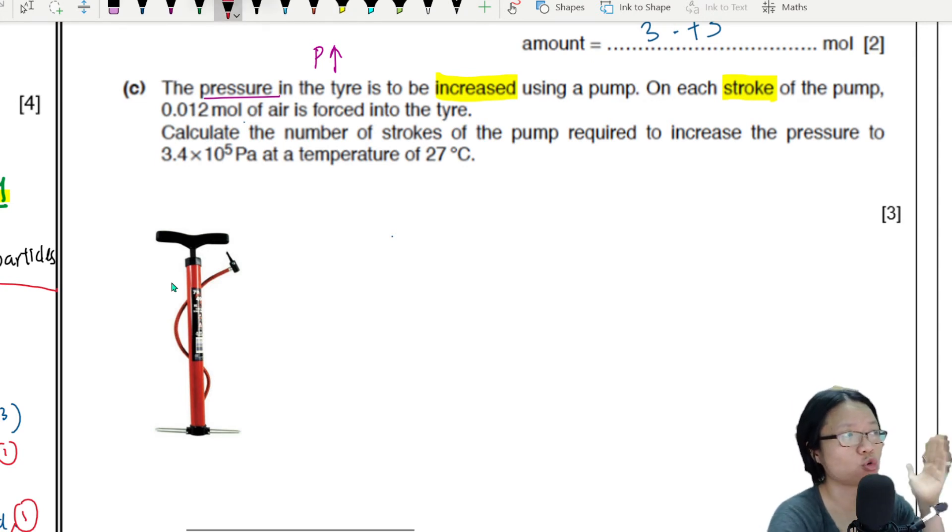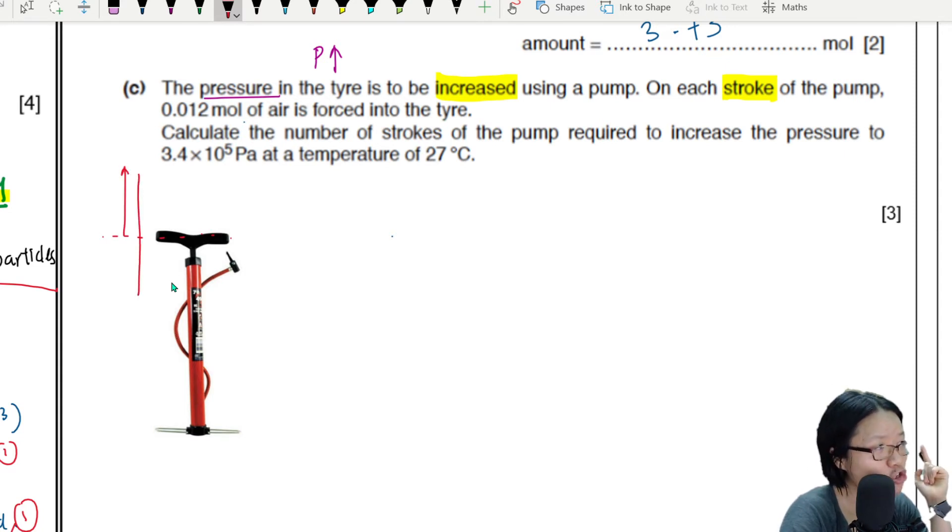So if you're wondering what pump, why stroke - okay, so this is a manual pump. I have taken the liberty to show you how it looks like. So every time - okay, this is the equilibrium position - I pull up the pump and then I push it down, I will add 0.012 mole into a tire that is connected to this nozzle.